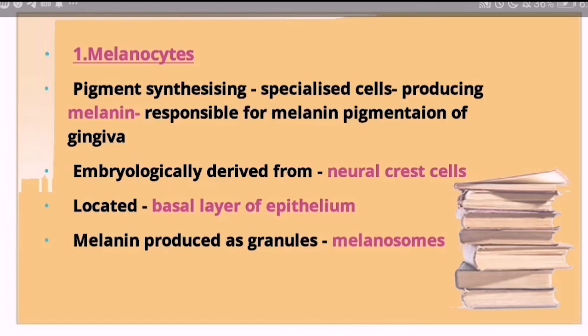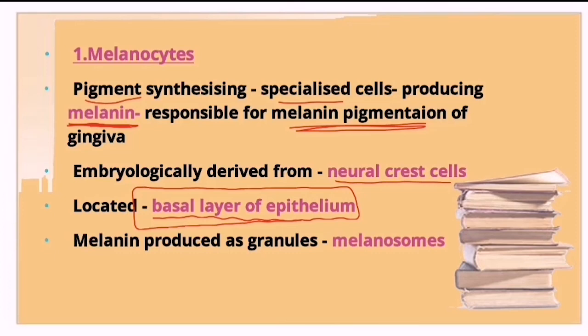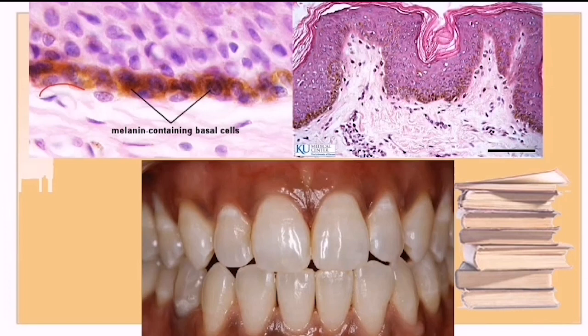Melanocytes are pigment-synthesizing cells that produce melanin, which is responsible for melanin pigmentation on the gingiva. Embryologically, they are derived from neural crest cells and are located in the basal layer of the epithelium. Melanin is produced as granules called melanosomes.